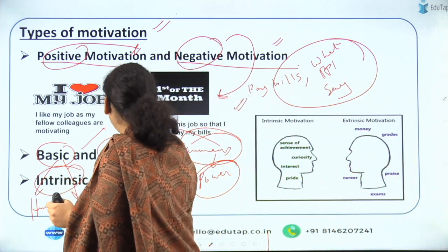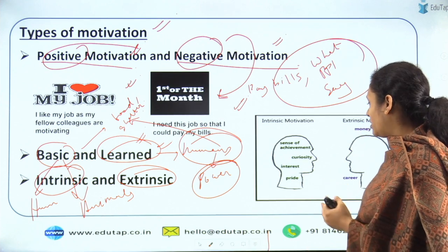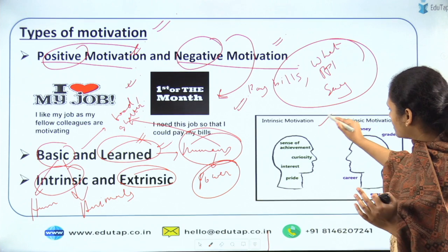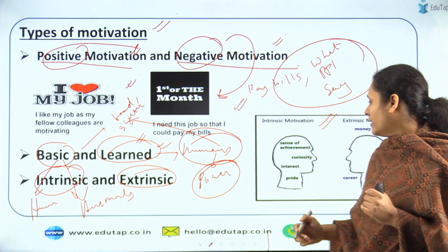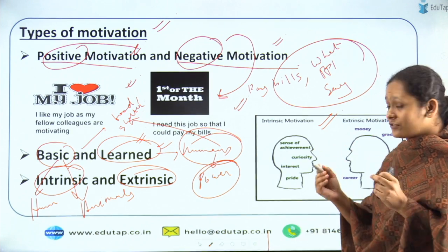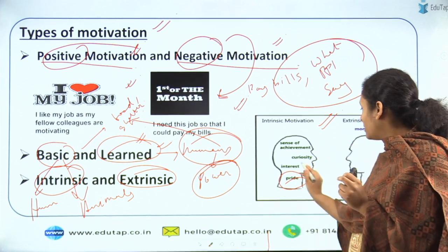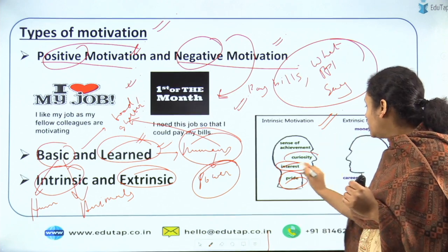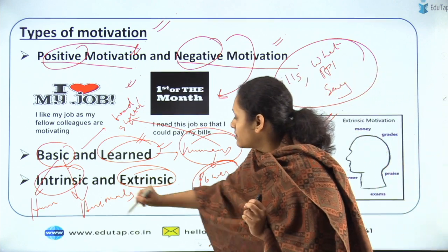Lastly, intrinsic and extrinsic motivation. Intrinsic motivation is that which comes from within. There is a sense of achievement — you want to do good, and after doing the work properly you feel pride. You take up something because you have interest in that work, you want to explore something new, and you are curious to learn new things. Those kinds of motivation are known as intrinsic motivation.